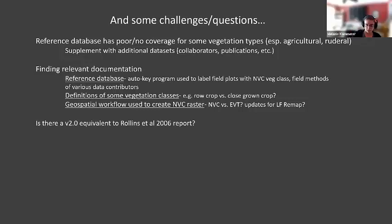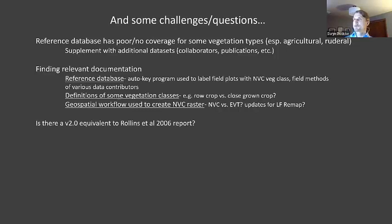I had a couple of specific questions listed, but I was also just looking for something to read to make sure I broadly understand where this NVC raster comes from. I know it has something to do with field plots, soils, topography, climate, and some other layers, but I'm not totally clear how all those pieces fit together. Darren: I have a flowchart pulled up here — I could share my screen.